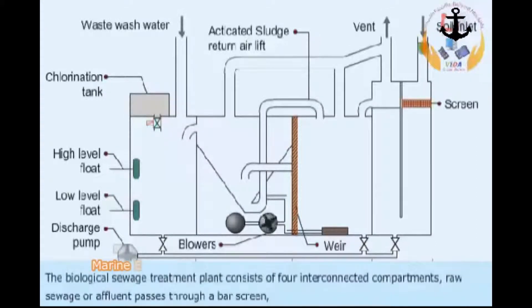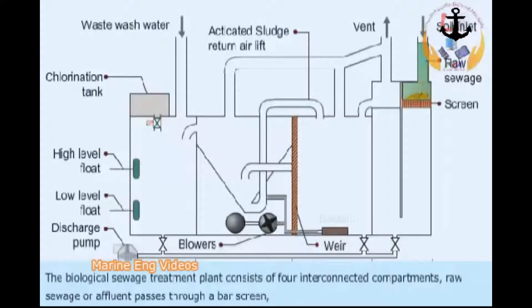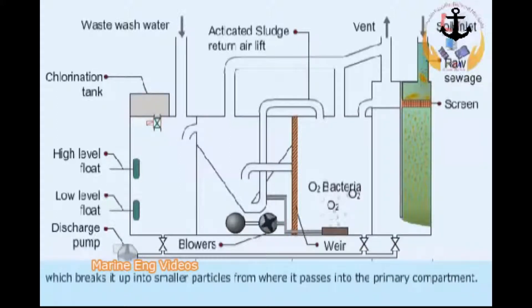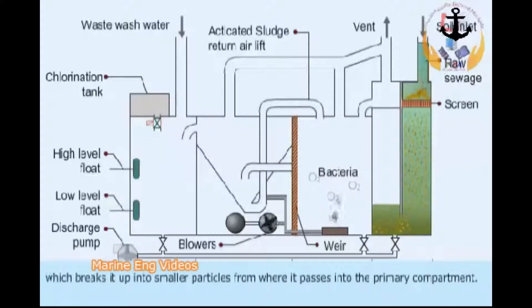The biological sewage treatment plant consists of four interconnected compartments. Raw sewage or effluent passes through a bar screen, which breaks it up into smaller particles, from where it passes into the primary compartment.